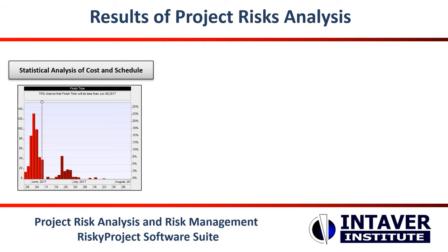The histogram provides information on the probability of certain outcomes. The cumulative probability provides confidence levels on how likely it is to meet specific objectives. In addition, the statistical analysis provides values for means, standard deviation, variance, and other metrics.